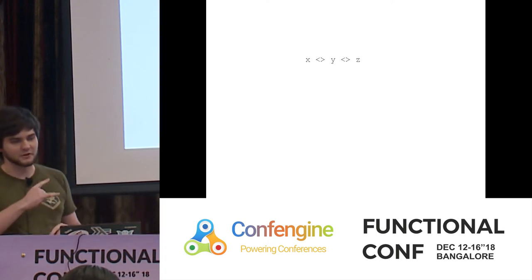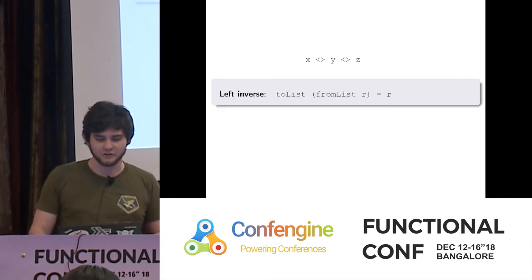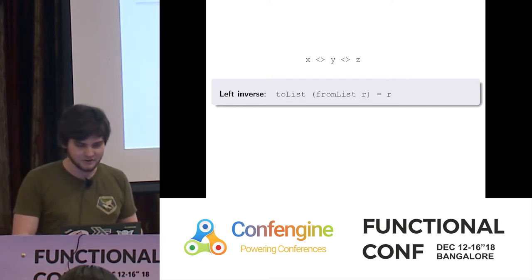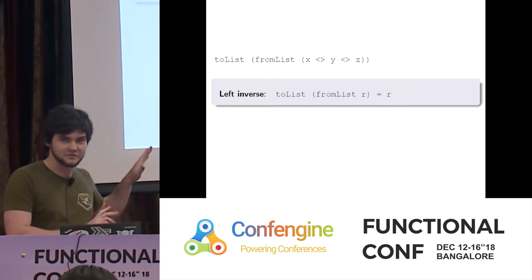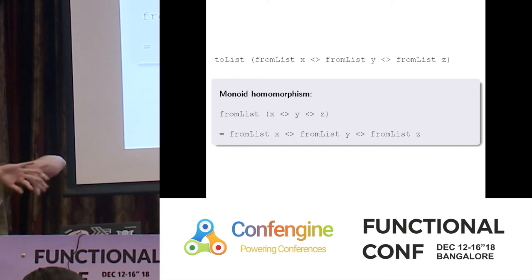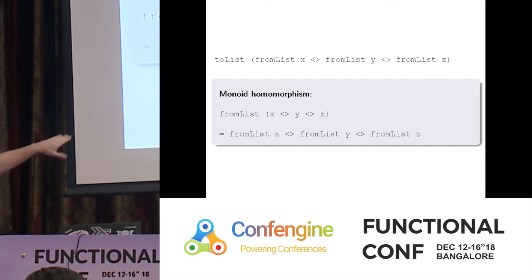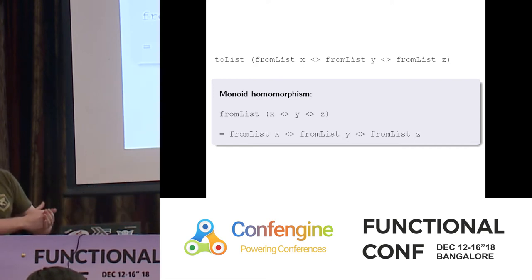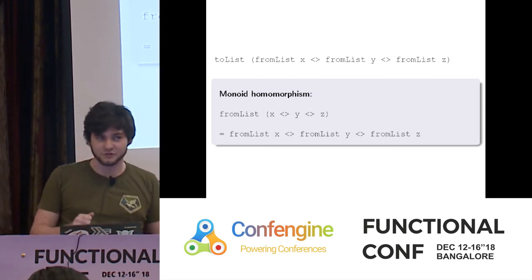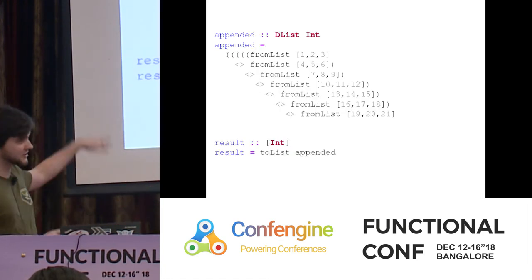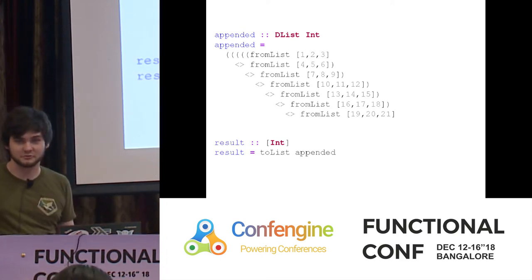Using equational reasoning and our laws: if we put a toList and fromList at the front, we don't change the answer. Then by the monoid homomorphism property, whenever fromList is outside a collection of appends, we can replace it with fromList on each constituent part and append in the world of DLists. So we fromList all our lists, append them as DLists, and call toList at the end — with right-associated appends at ideal linear-time performance. Whether our appends were left or right, we get the best performance.